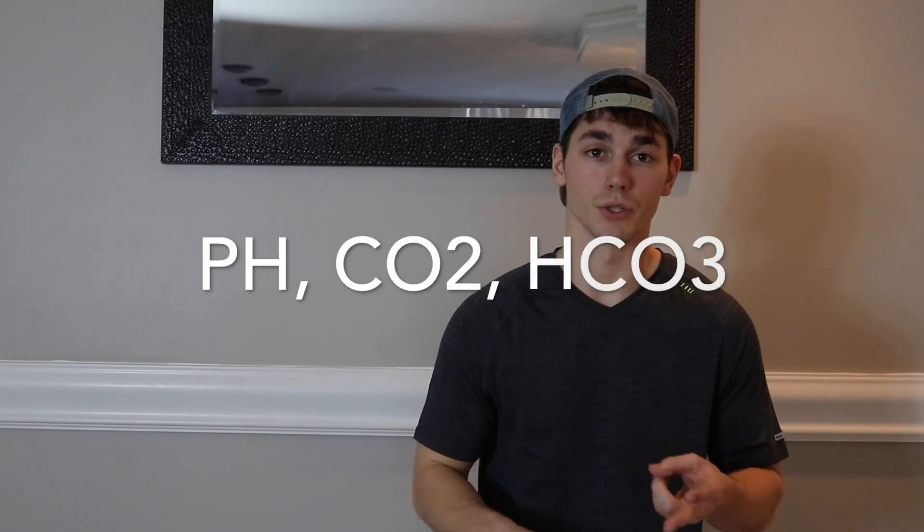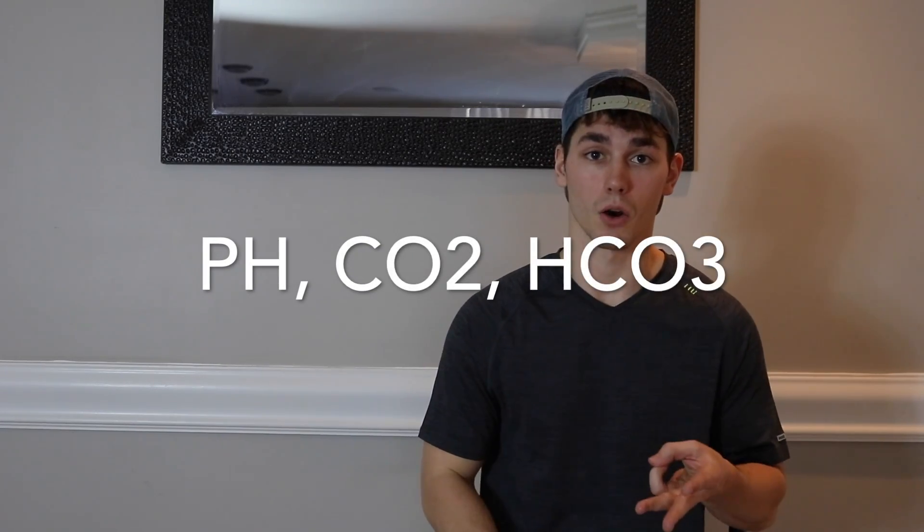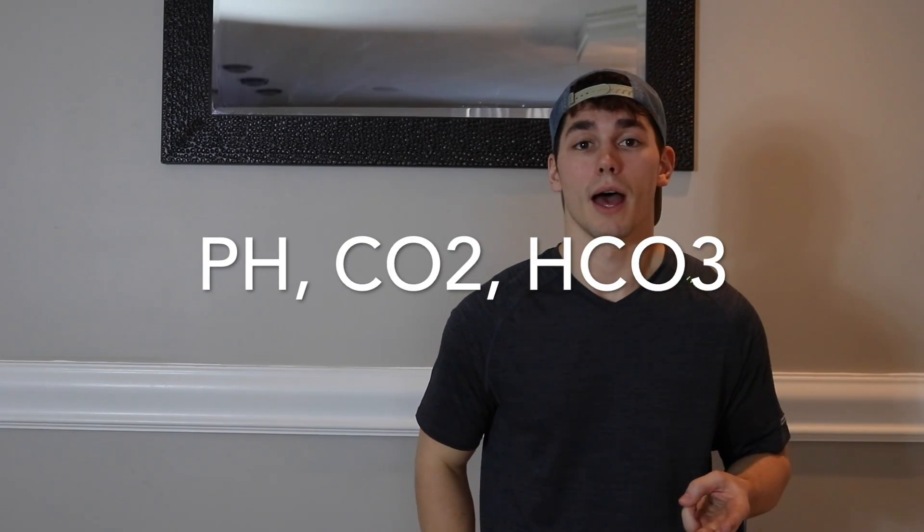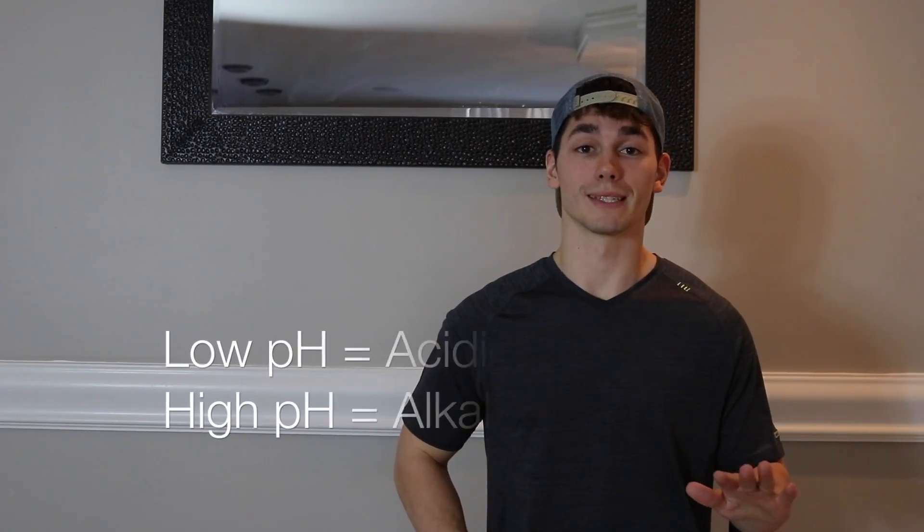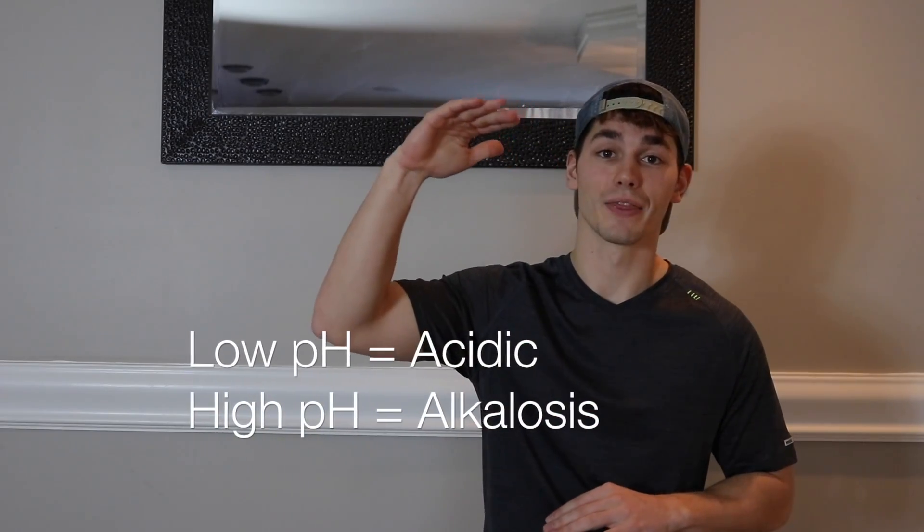For the purpose of ABGs, we're looking at pH, CO2, and then the bicarb. Now if the pH is low, that means it's acidic. If the pH is high, then that means it's an alkalotic environment. There are a ton of different ways I've seen people explain how to tell if it's metabolic or if it's respiratory acidosis.